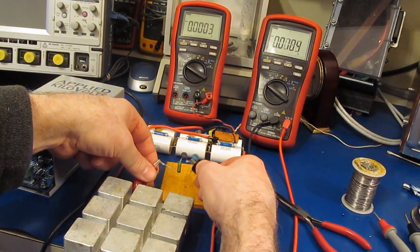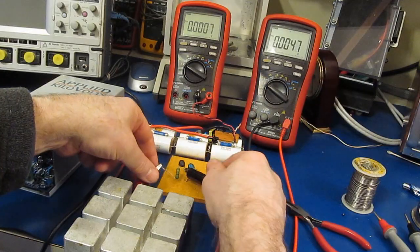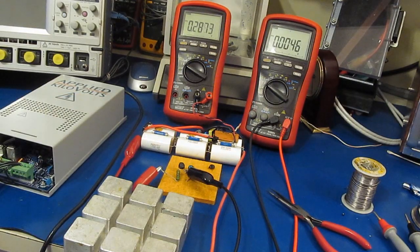What we'll do now is just clamp directly across the PTC and resistor. Let's go ahead and turn up our voltage.